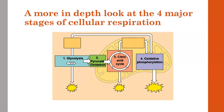This is Chapter 7, Lesson 2. We're now going to get into a more in-depth look at the processes of cellular respiration and dive deeper into the four major stages that we learned about briefly in the first introductory lesson of Chapter 7. Recall those four stages as glycolysis, pyruvate oxidation, the citric acid cycle, and oxidative phosphorylation. Let's start with a deeper look at glycolysis.